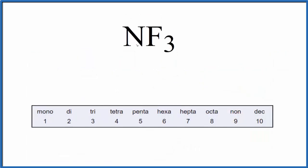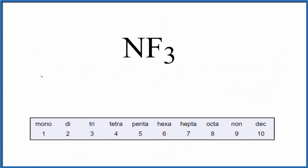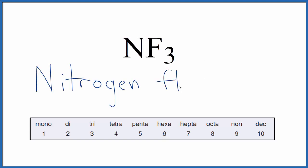On the periodic table, N is nitrogen. And F is fluorine, but we change that to fluoride — note the lowercase f. When we only have one of the first element, we don't write anything in front of it; we just call it nitrogen, like we find it on the periodic table.